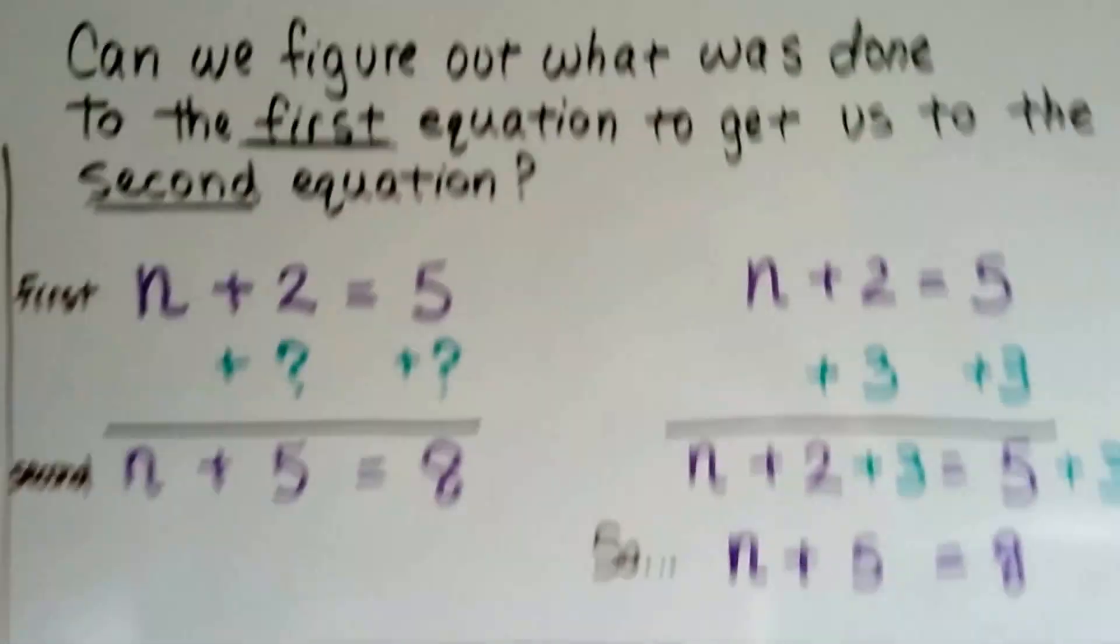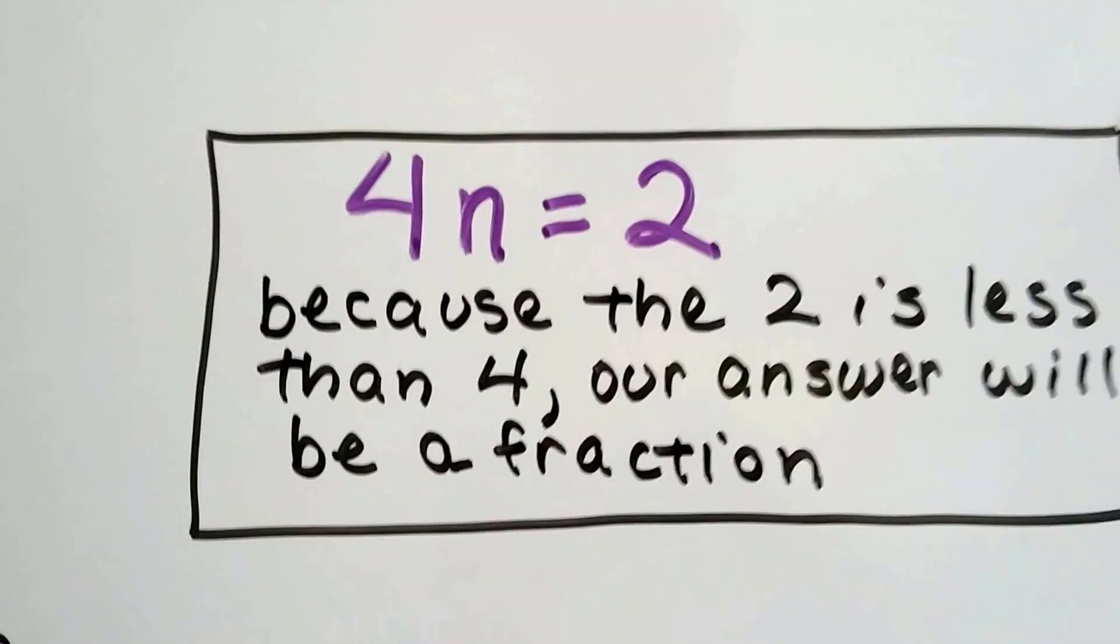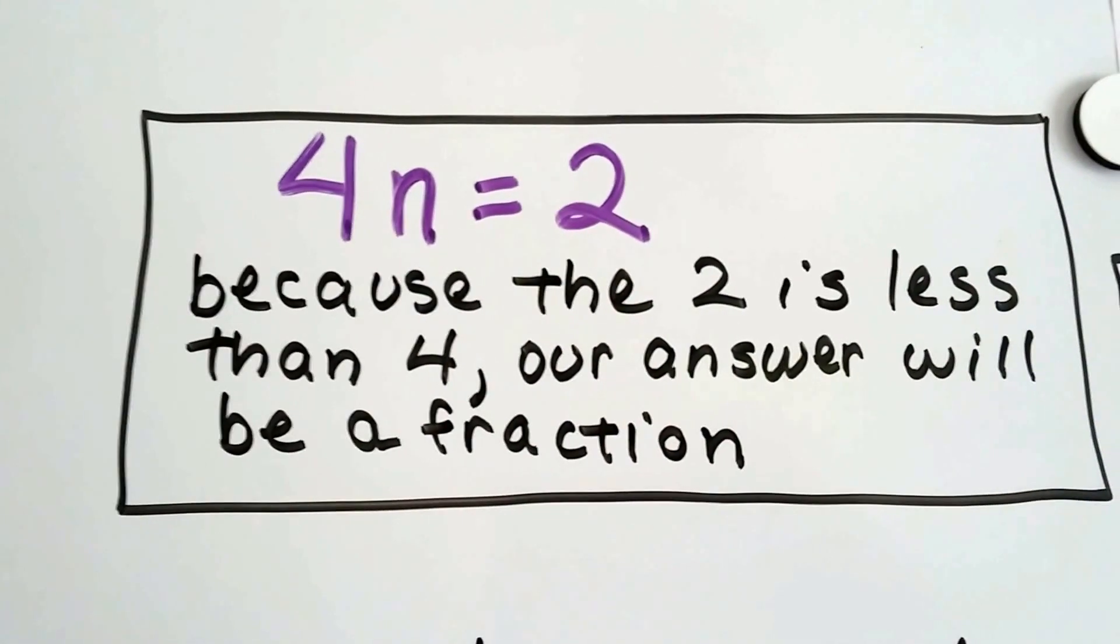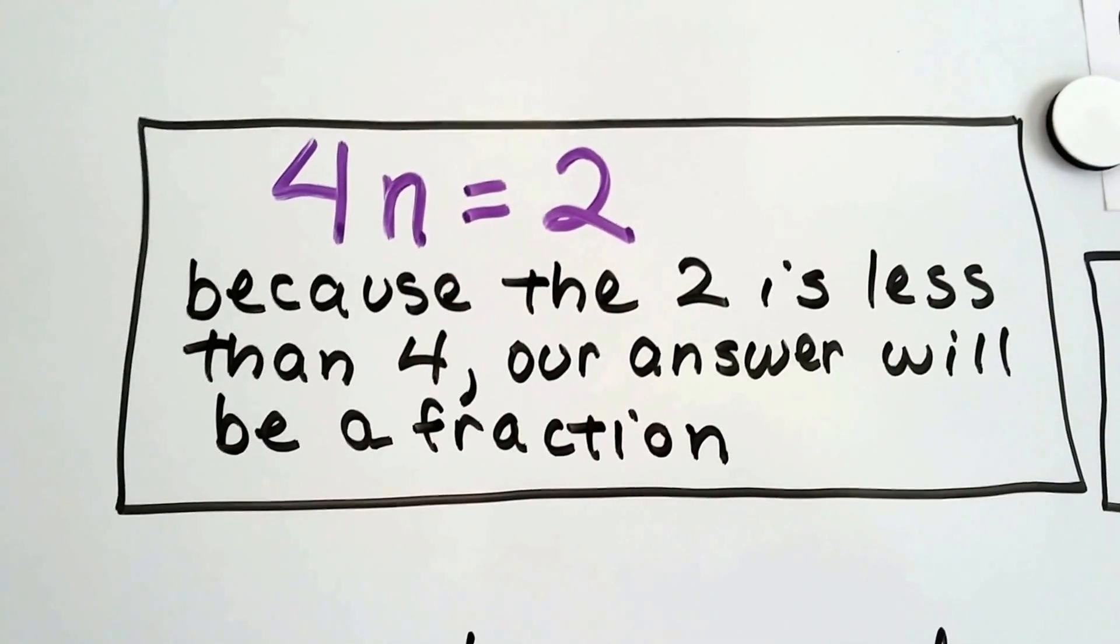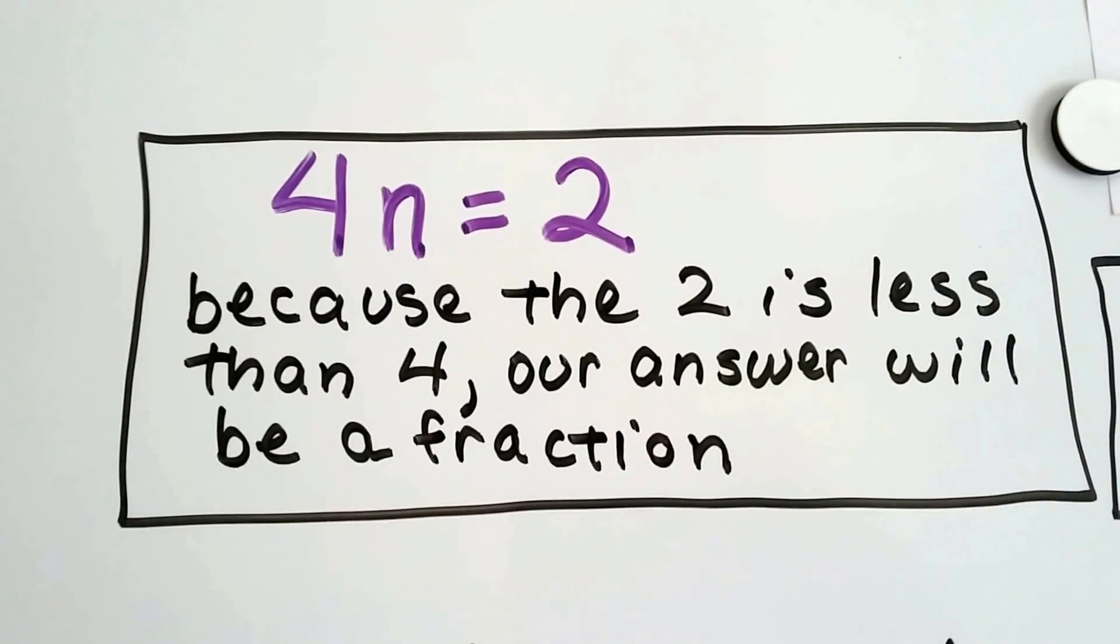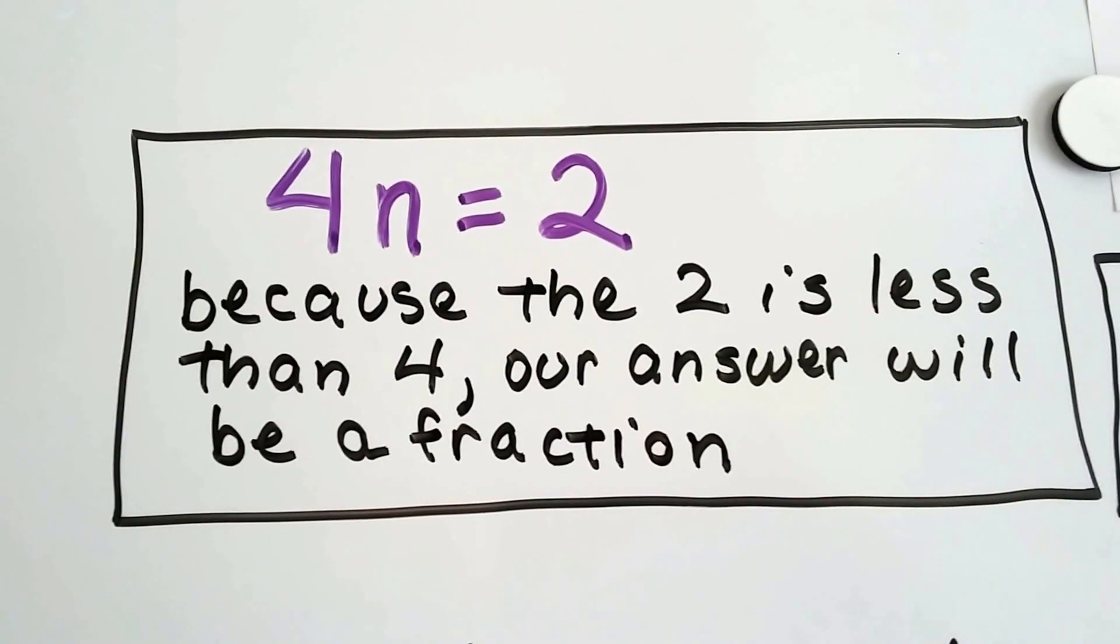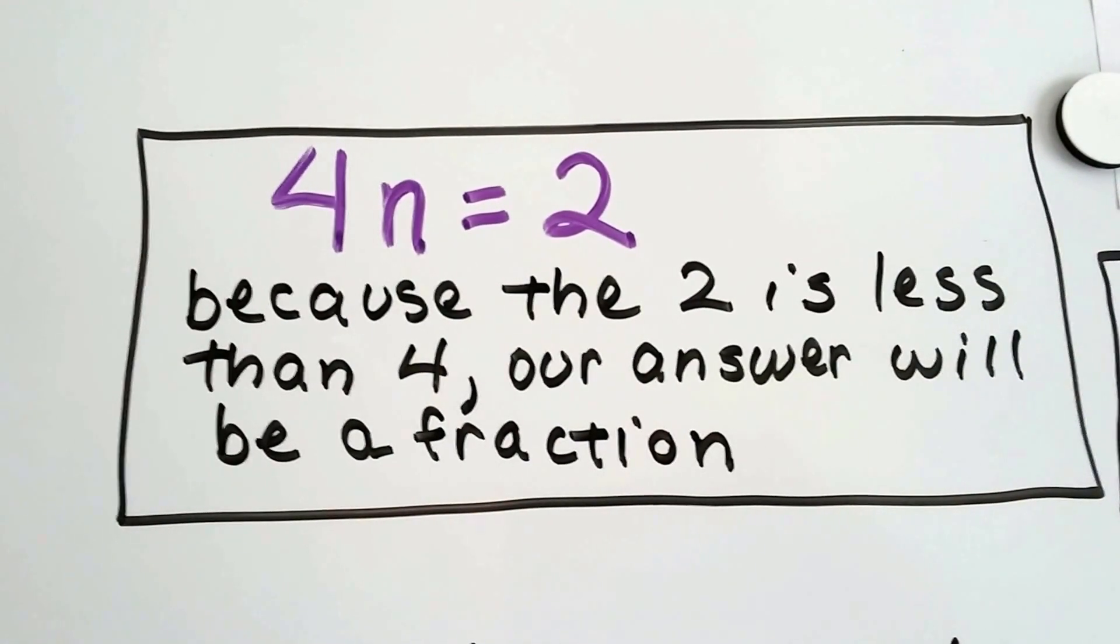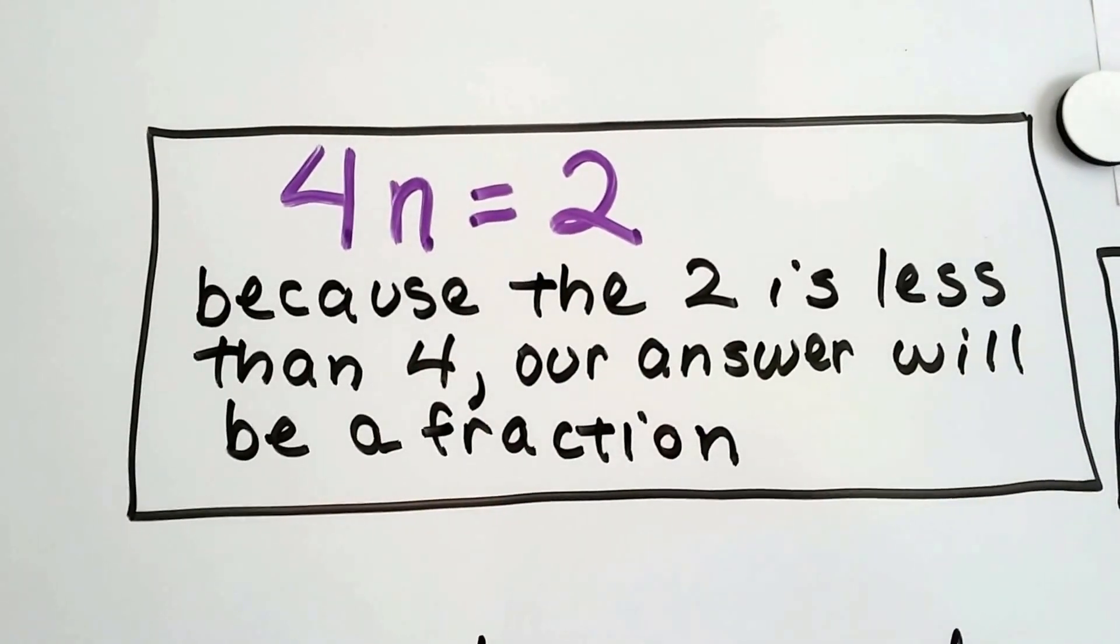I want to tell you something else. Look at this one. We've got 4n equals 2. And because that 2 is less than the 4, we know our answer is going to be a fraction. Because 4 times something to equal a smaller number, it's going to have to be 4 times a half. If you have 4 halves, then you'll have 2 whole. So it's going to end up being a fraction.